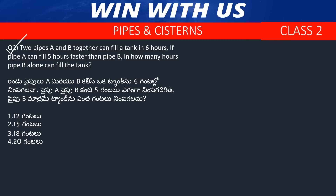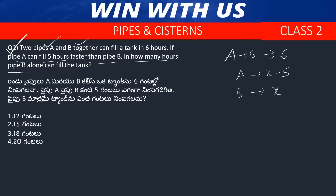Question number 2. Two pipes A and B together can fill a tank in 6 hours. Pipe A fills 5 hours faster than pipe B — so if pipe B takes x hours, pipe A takes x minus 5 hours. In how many hours can pipe B alone fill the tank?